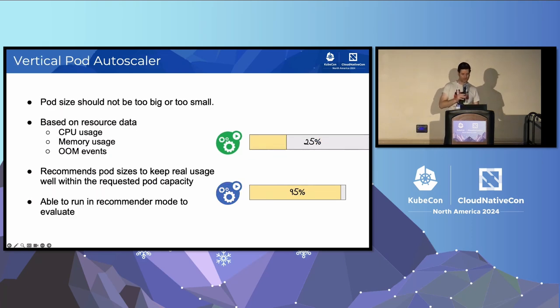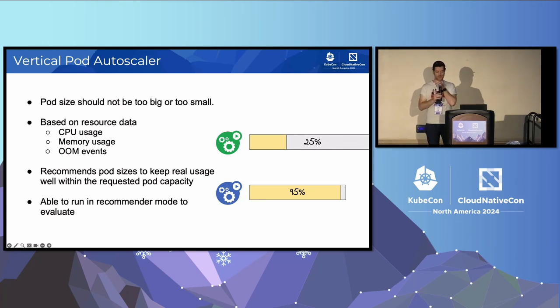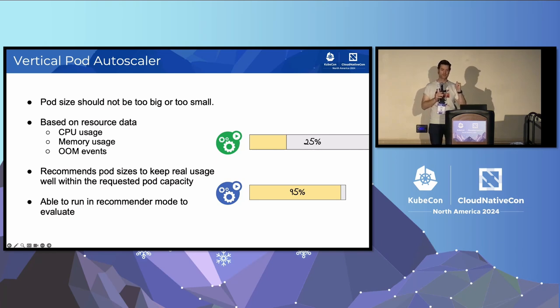VPA — Vertical Pod Autoscaler. VPA essentially does the same thing as HPA in response to operational triggers, but instead of creating more pods, it creates bigger or smaller pods.